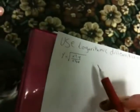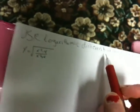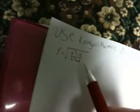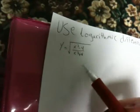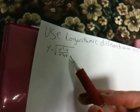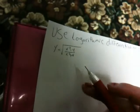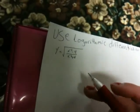Hi everyone. Today we will use logarithmic differentiation to find dy/dx, where we have y equals the square root of x squared minus 4, divided by x squared plus 4.